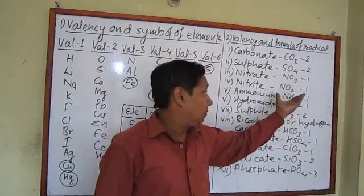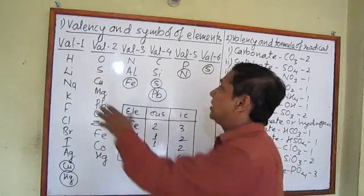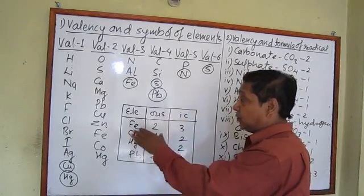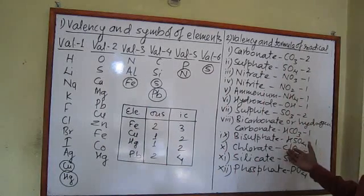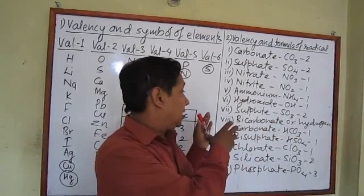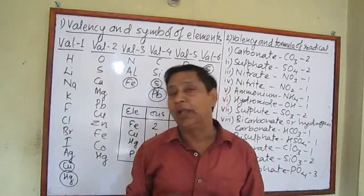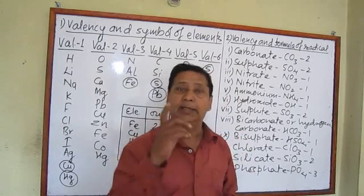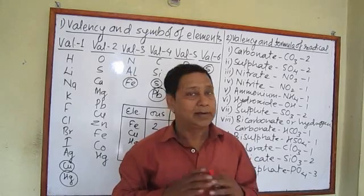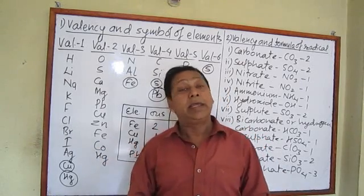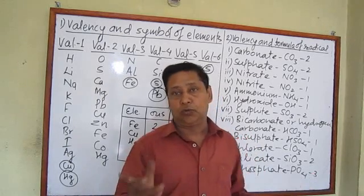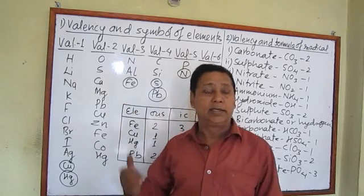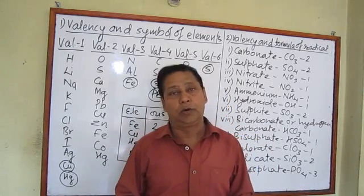These are the radicals with their formulas and valencies, and these are the elements with their variable valencies. We must remember the valency, symbol, and formula for all of these — without this knowledge we cannot write the molecular formula of a compound, and without that we cannot write chemical reactions. For example, you should instantly know: sodium has valency one, nitrogen valency three, sulfate SO4 valency two, phosphate PO4 valency three. We must be very fluent and clear on these concepts.